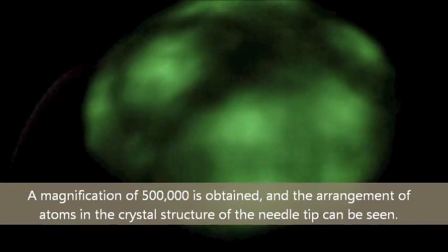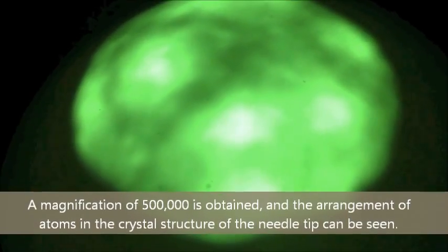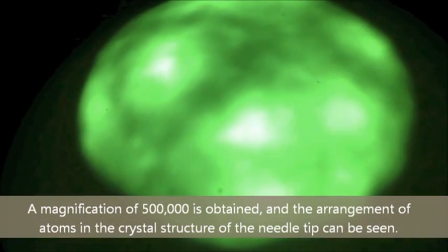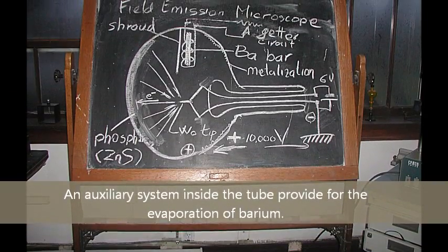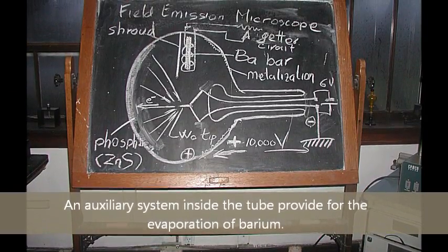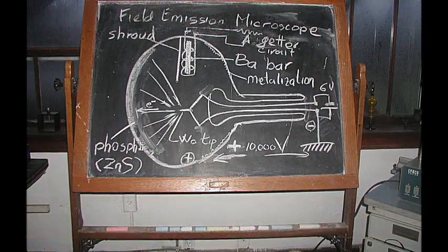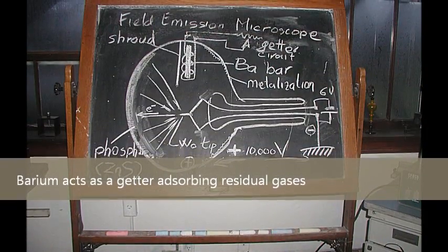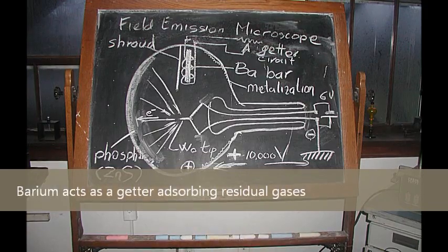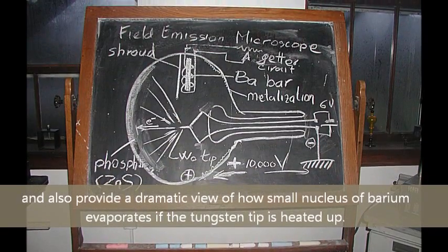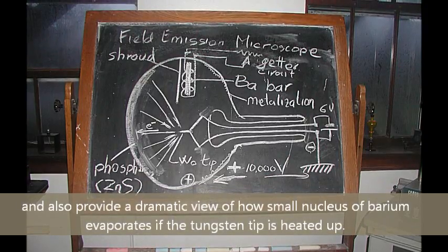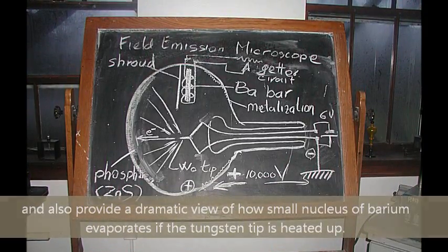The arrangement of atoms in the crystal structure of the needle tip can be seen. An auxiliary system inside the tube provides for the evaporation of barium. Barium acts as a getter, absorbing residual gases and also provides a dramatic view of how small nucleus of barium evaporates if the tungsten tip is heated up.